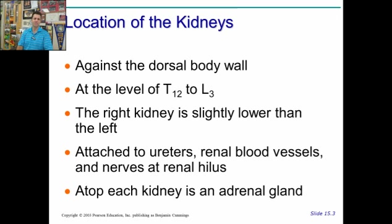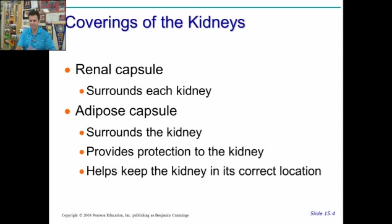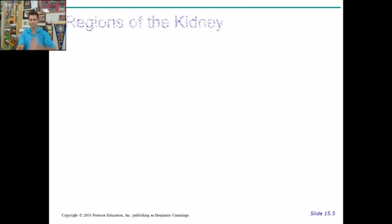The kidney is attached to ureters, and there are also blood vessels called renal blood vessels — renal means kidney. On top of each of the two kidneys are the adrenal glands, which we visited before. The kidneys are covered in what's called a renal capsule — you'll see that when we dissect the cats. As well as an adipose capsule, which is fat-based, so the kidney is basically hiding in this package of fat. It helps protect the kidney and keep it exactly where it needs to go so it doesn't float around and move around.